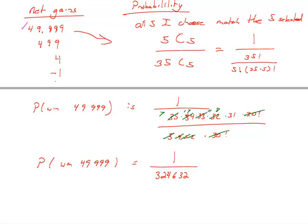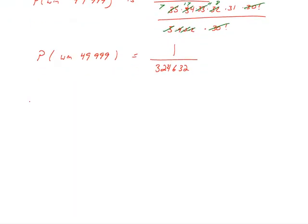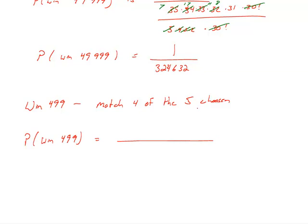And this is where it's going to get a little bit more challenging to get those probabilities. So we're going to look at the 499 winning. So the outcome is I win 499. What this means is I match 4 of the 5 that are chosen. And so I want to look at how many ways that's possible out of the 35, matching 5 out of the 35. Which I already know the denominator for. So the probability that I win 499 is going to be the number of ways that this can happen. I'm going to match 4 of them. But my 5th one doesn't match. Out of the possible ways that I can choose 5 out of 35. And we already saw that to be 324,632. So that part's done. What we've got to do is figure out the numerator.